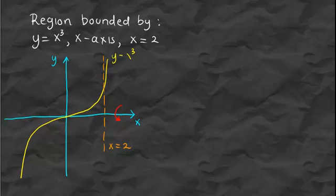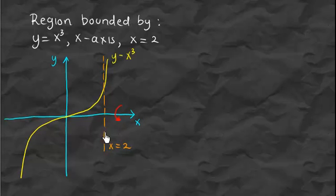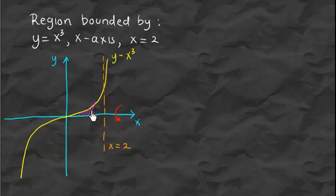In this video we want to discuss how to find the volume of revolution. We have a region bounded by the graph of y equals x cubed (the yellow one), the x-axis (the blue one), and the line x equals 2 (the orange one). The region bounded by those three graphs is shown, and now we want to rotate this region about the x-axis.